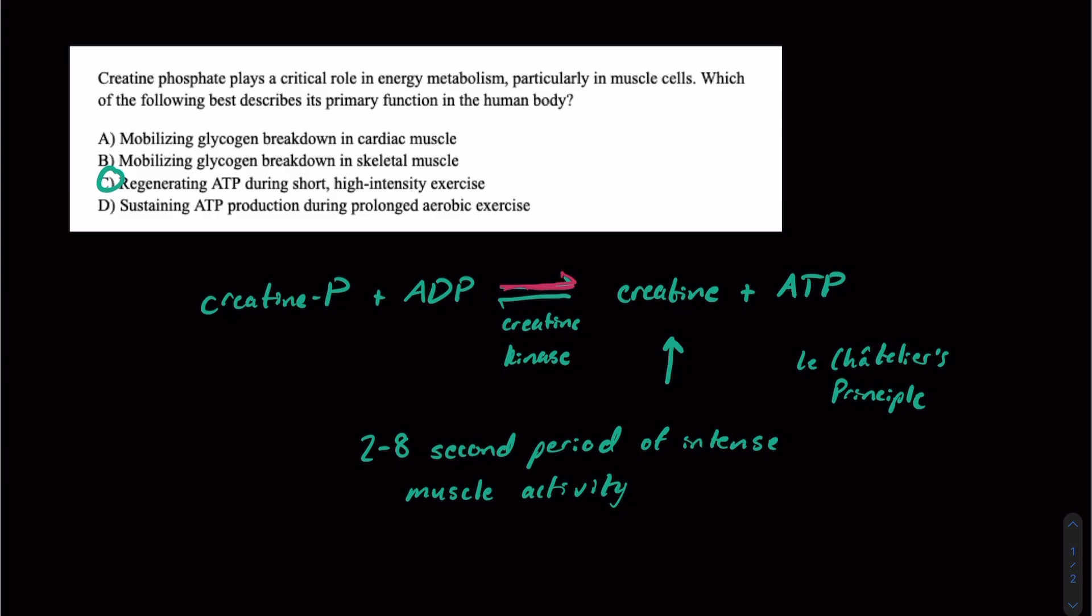And then sustaining ATP production during prolonged aerobic exercise. We should know that's probably going to be more a function of aerobic respiration where we're performing glycolysis and then having the end product of glycolysis, pyruvate, go into the mitochondria.